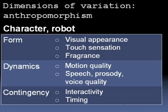When it comes to dimensions of variation in human likeness or anthropomorphism, there are more dimensions than just visual appearance. That's part of form, but there's also touch sensation, fragrance, and then the dynamics of the android — for example, motion quality, speech, prosody (which is the rhythm and pitch of speech), voice quality, and also contingency or interactivity.